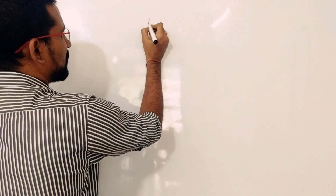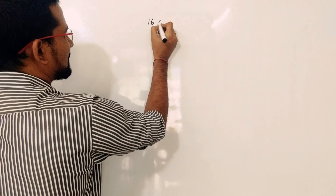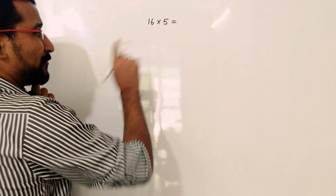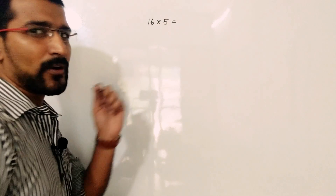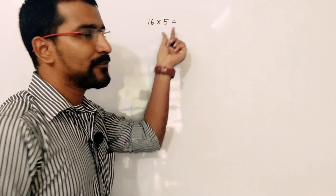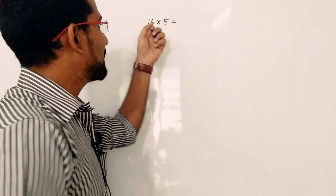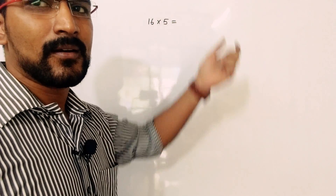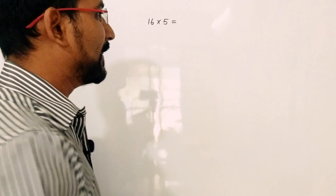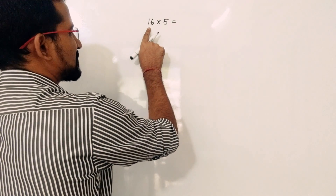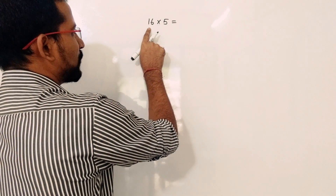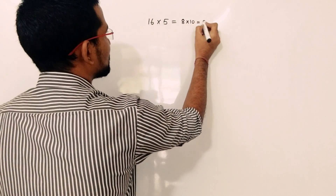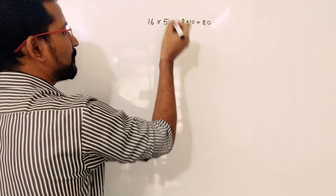First, take a small value — for example, you want to multiply 16 by 5. So what you have to do is: whatever number you have to multiply by 5, divide that value by 2 and then multiply the result by 10. So 16 divided by 2 is 8, then multiply by 10, so the answer is 80.